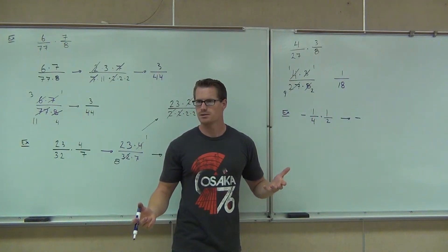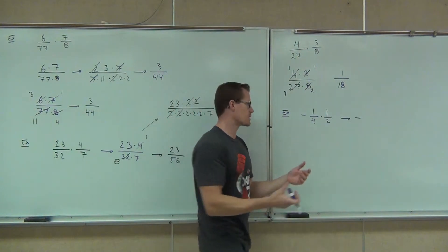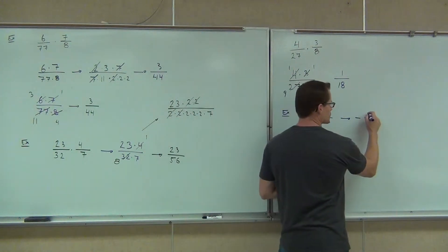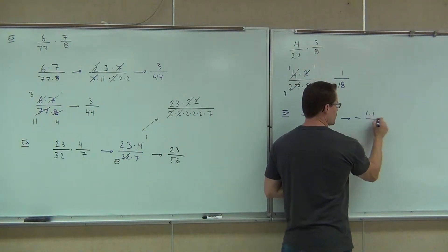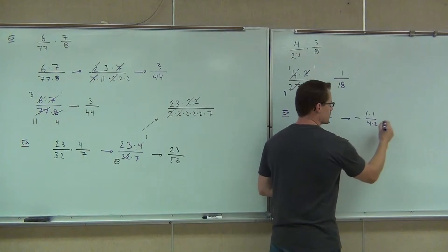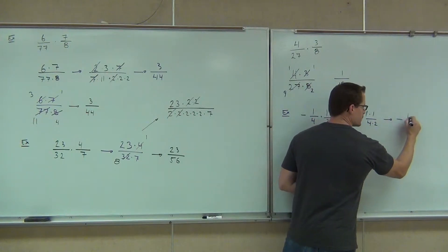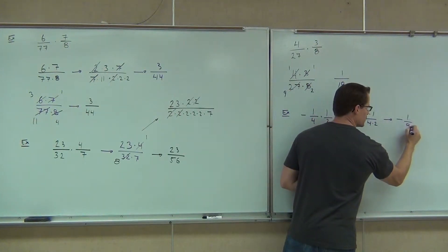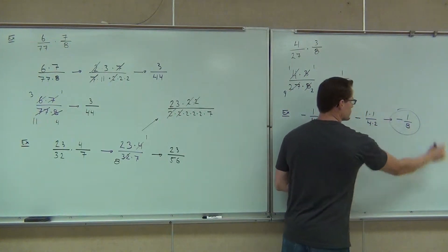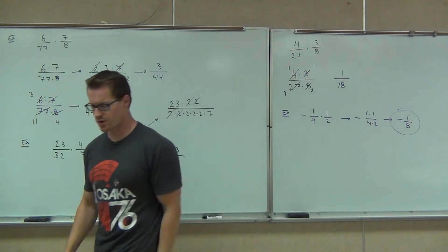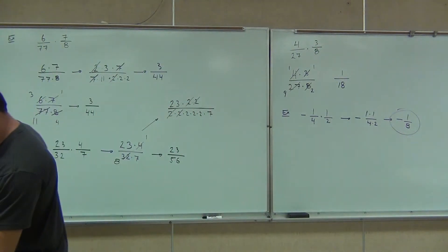Are you with me on that? So here we go — we know the fraction's negative. I know it's going to be 1 times 1 over 4 times 2, and that's going to give me negative 1/8.